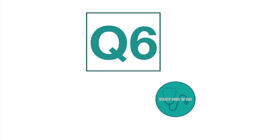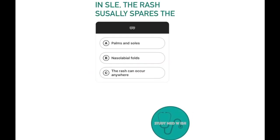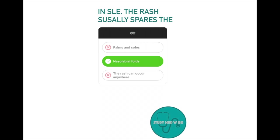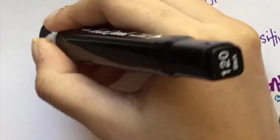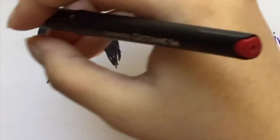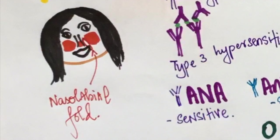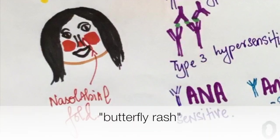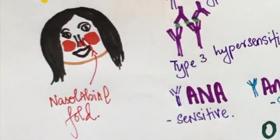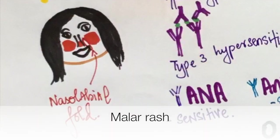In SLE, the rash usually spares which of the following areas? Option A palms and soles, option B nasolabial folds, option C the rash can occur anywhere. The correct answer is nasolabial folds. In patients with SLE, this particular portion of the face will not have a rash, giving it the characteristic butterfly appearance. This is also known as malar rash.